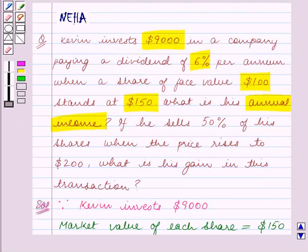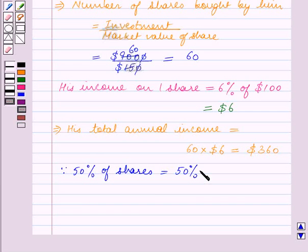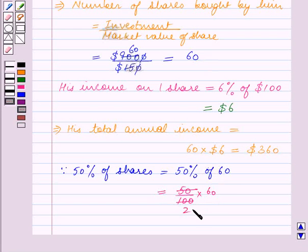Now we are given that he sells 50% of his shares when the price rises to $200, and we have to find his gain in this transaction. Since 50% of shares equals 50% of the total number of shares, which is 60, this is equal to 50 divided by 100 multiplied by 60, so this is equal to 30.